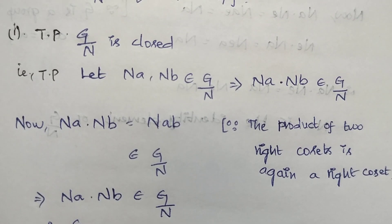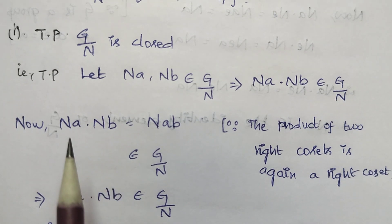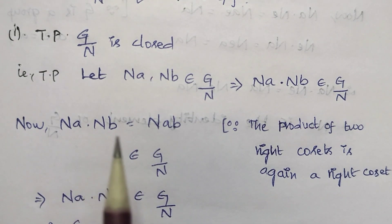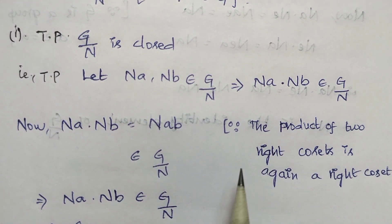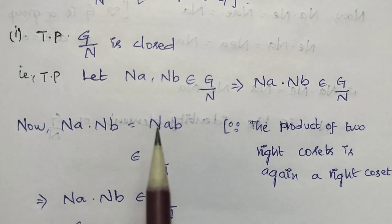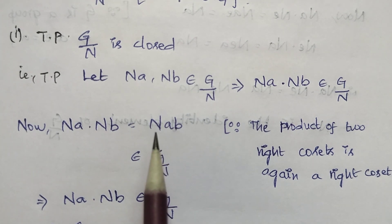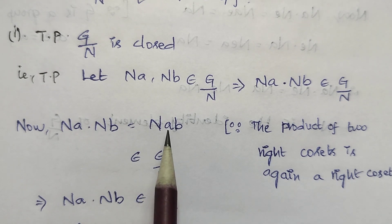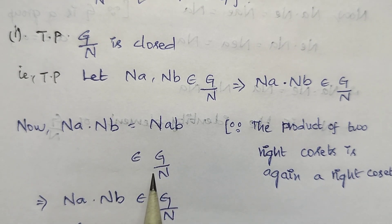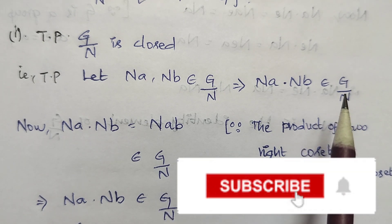Let us use that lemma: the product of two right cosets is again a right coset. So Na·Nb = Nab. We can say that the result is the right coset Nab, which belongs to G/N. So closure is satisfied.